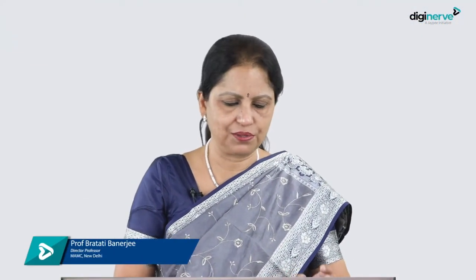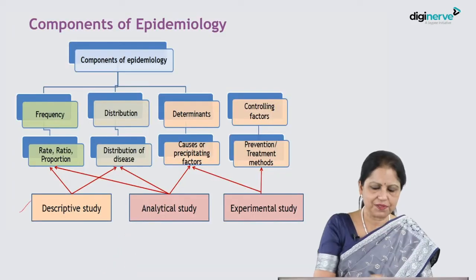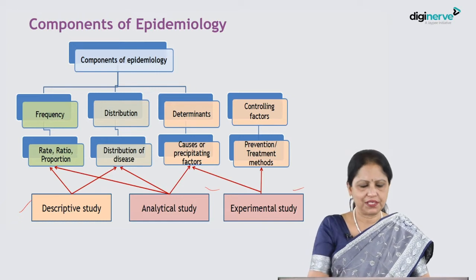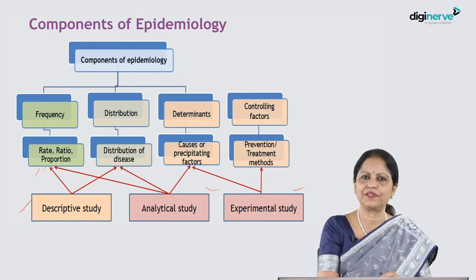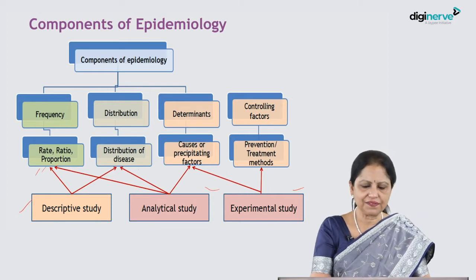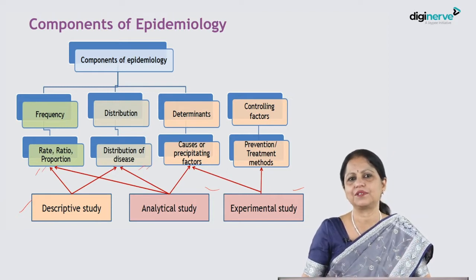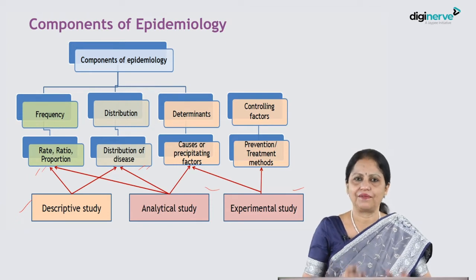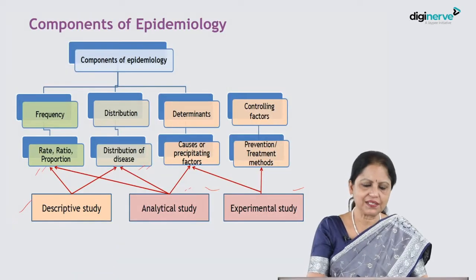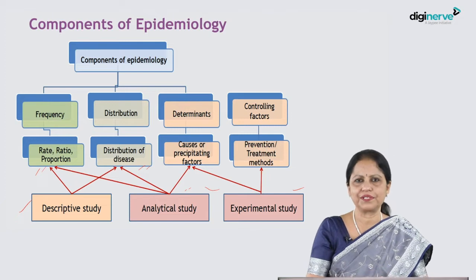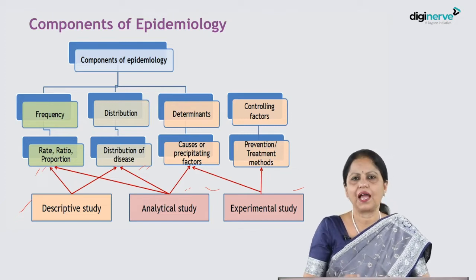This is a recapitulation from an earlier session. There are three broad types of studies: descriptive, analytical, and experimental. Descriptive studies are used for estimating the frequency of the disease and identifying the distribution pattern in terms of time, place, and person. From that we formulate a hypothesis, and in analytical studies we test that hypothesis.